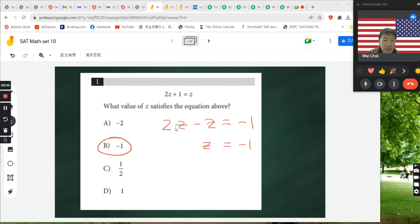So the equation is now 2z minus z equals negative 1. Therefore, z equals negative 1. So the answer is B.